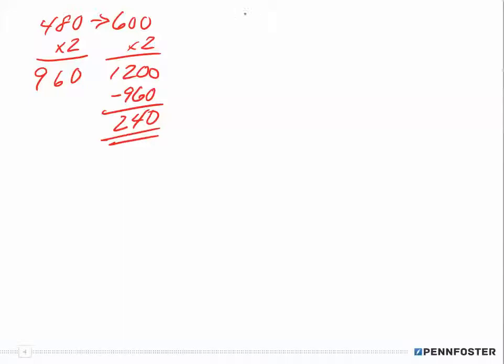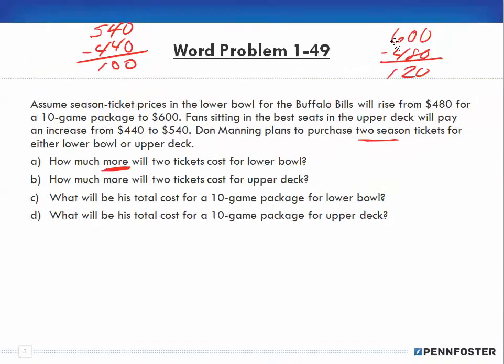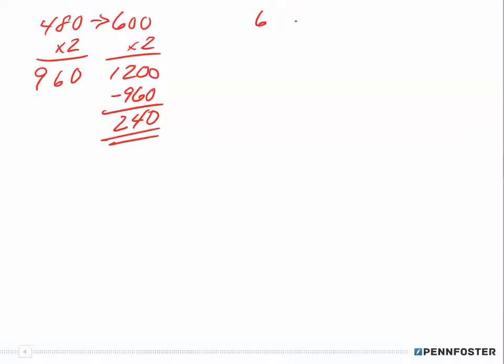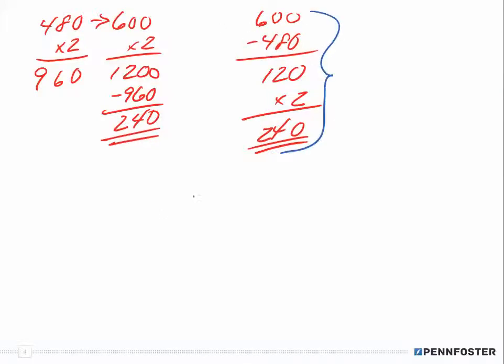Or I could do it by saying okay, 600 minus 480 is $120. That's how much more one ticket would cost, so if I multiply that by two I end up with the same thing: $240. The thing to notice here is how much less math I'm doing if I do it this way versus doing it that way. You can arrive at the same destination two different ways, but one is more efficient.